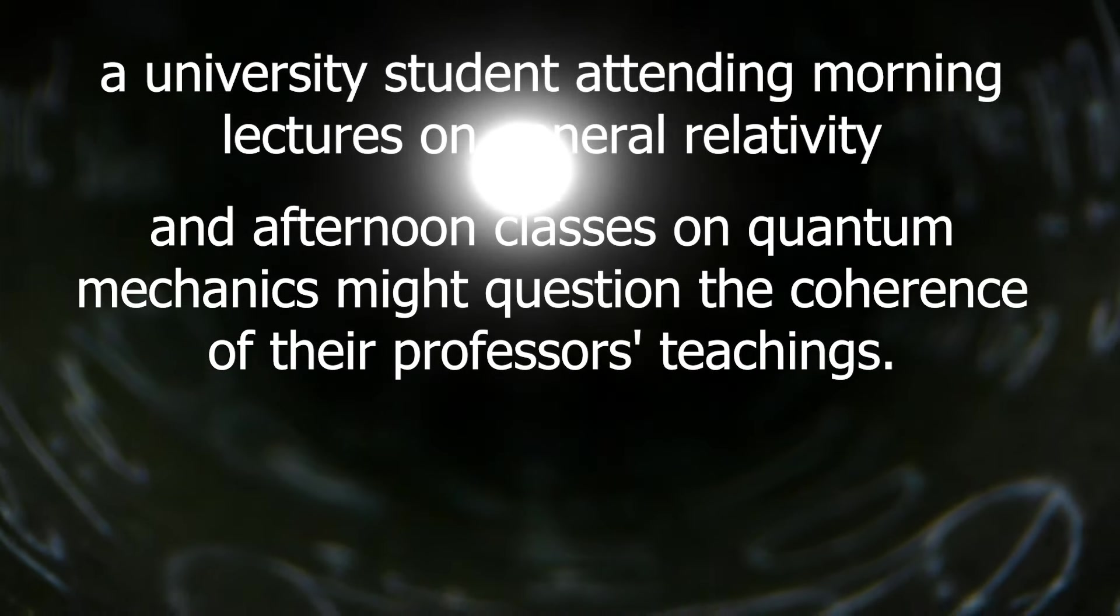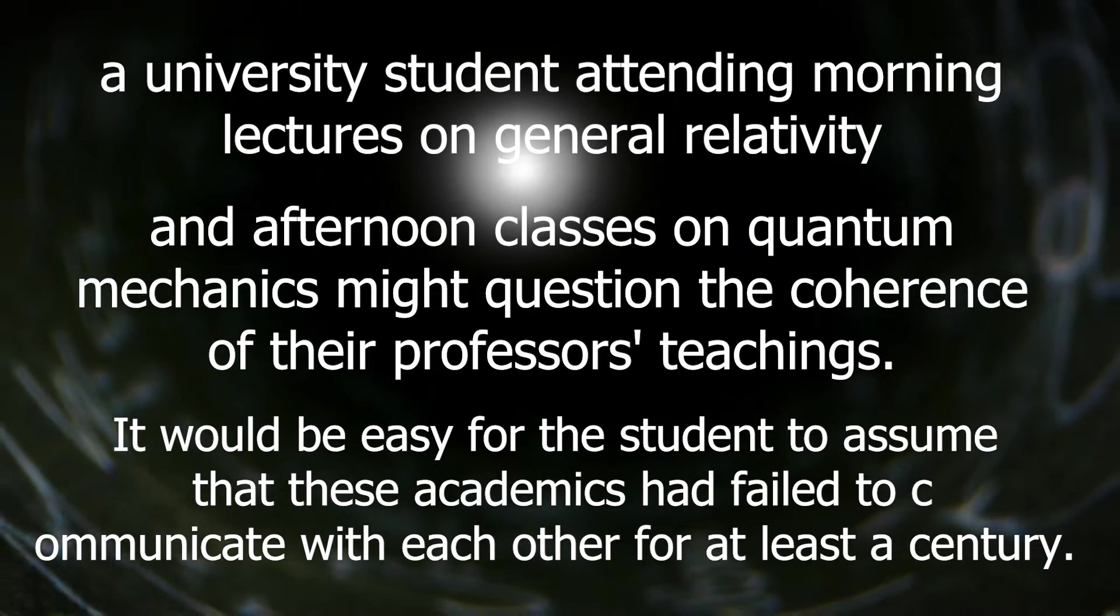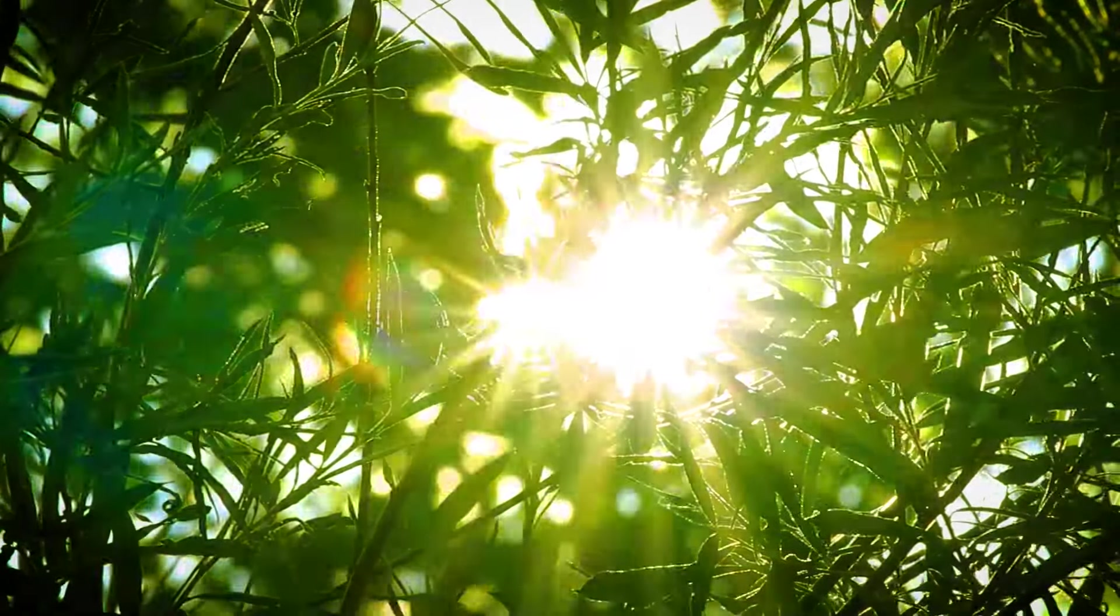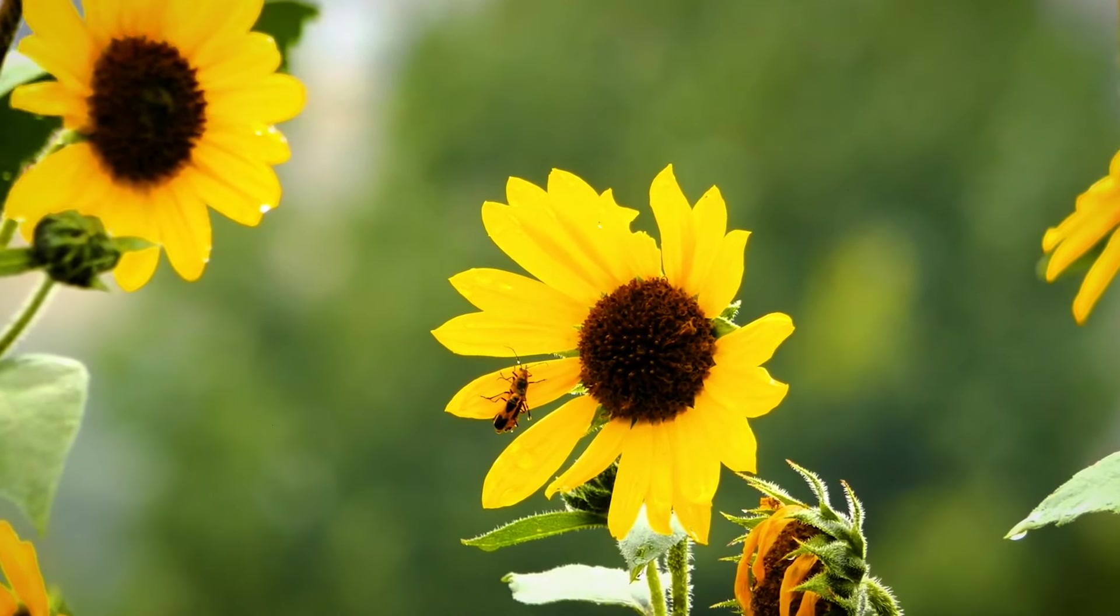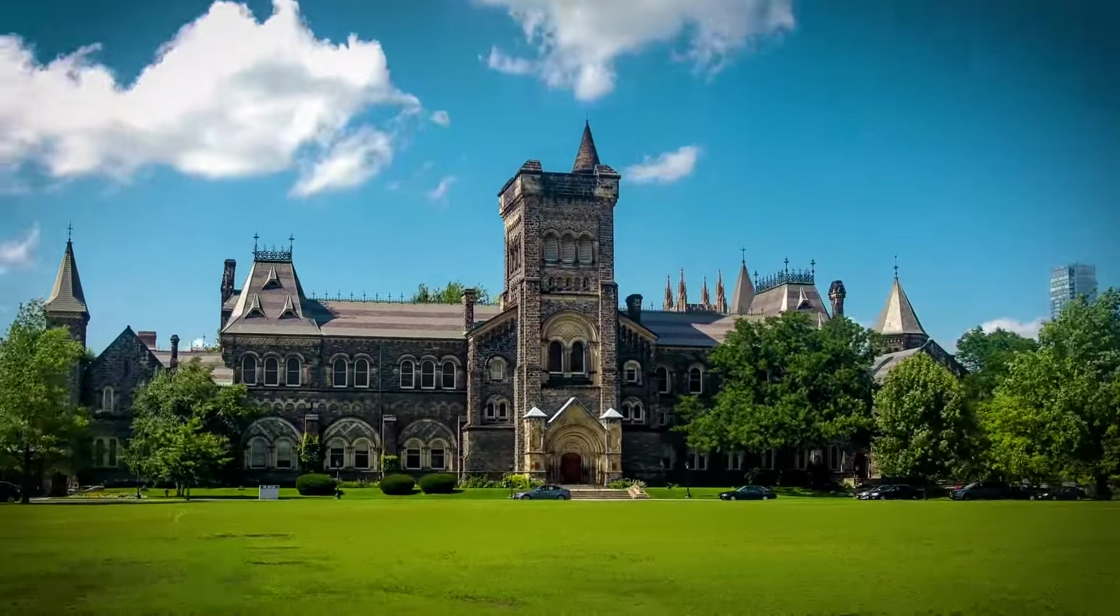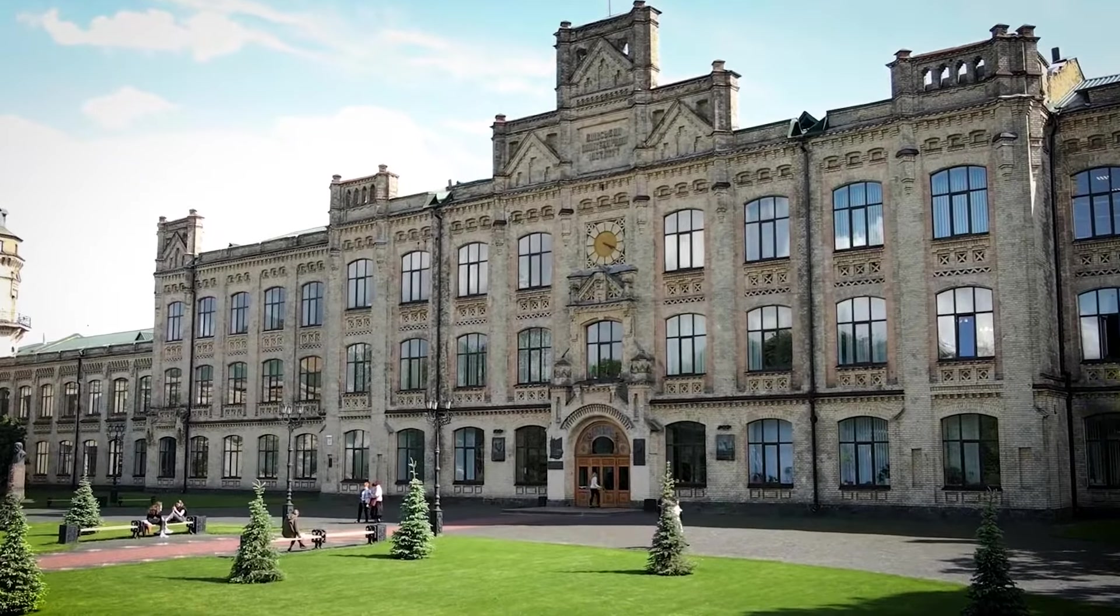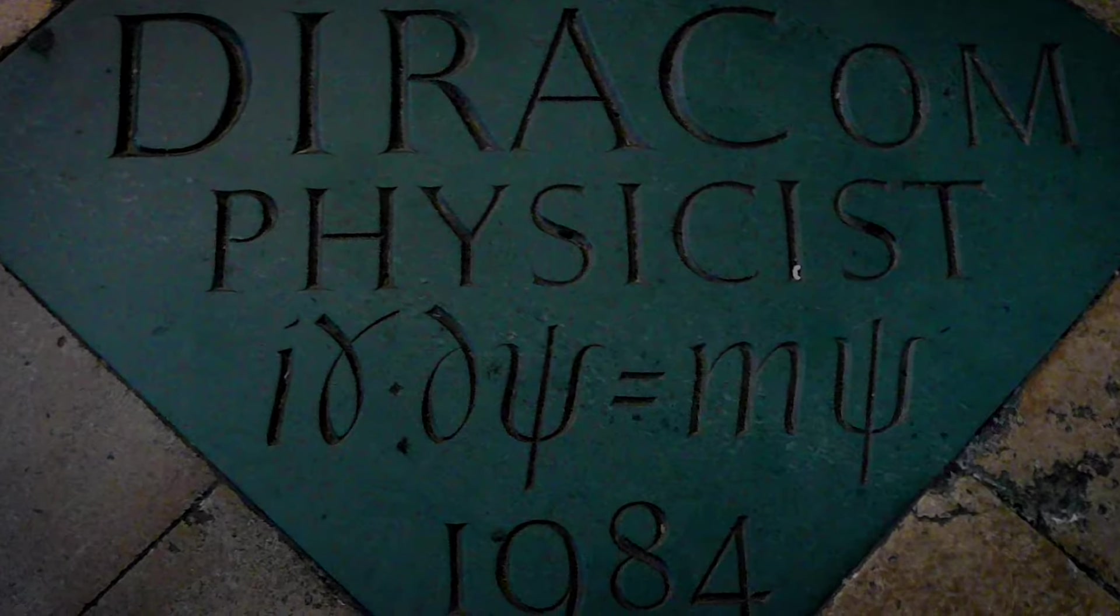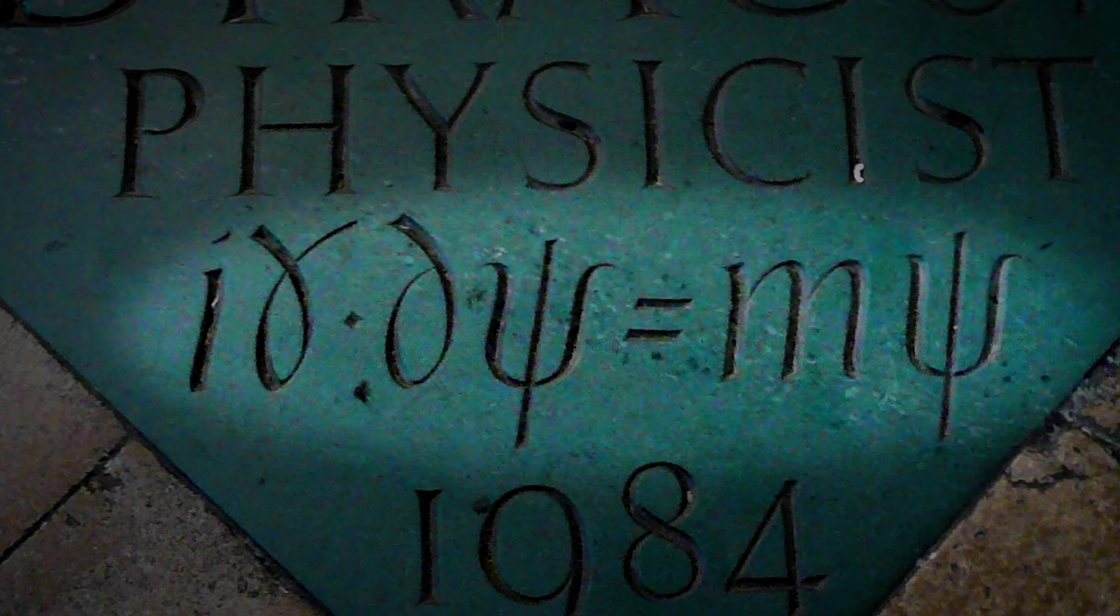In a different setting, a university student attending morning lectures on general relativity and afternoon classes on quantum mechanics might question the coherence of their professors' teachings. It would be easy for the student to assume that these academics had failed to communicate with each other for at least a century. Meanwhile, within the tranquil Rose Lawn Cemetery in Tallahassee, Florida, a grave holds the remains of a man who passed away in 1984 at the age of 82. What sets him apart from the others in the graveyard is a plaque at Westminster Abbey, not far from Isaac Newton's resting place. The plaque provides minimal information, identifying the man as a physicist and stating his birth and death dates. Yet, it also features an equation, a complex amalgamation of Latin and Greek letters. Remarkably, this equation represents the groundbreaking achievement of unifying Einstein's relativity and quantum mechanics for the first time.